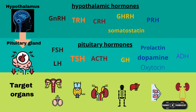A quick overview of the hypothalamic and pituitary system: we have the hypothalamic hormones, which are secreted by the hypothalamus, which is part of the brain. The pituitary gland is attached to the hypothalamus, and each specific hypothalamic hormone will trigger a specific pituitary hormone to be secreted by the pituitary into the blood circulation, which will then go to the specific target organ and have their programmed effect.